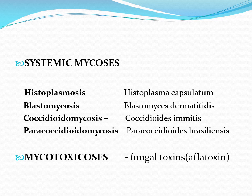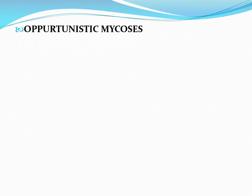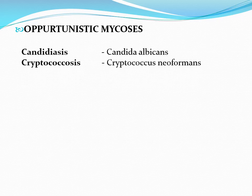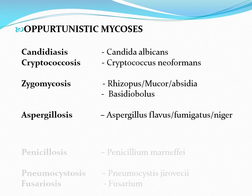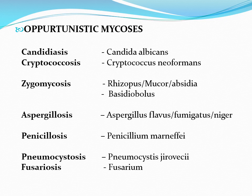Mycotoxicosis refers to disease caused by toxins produced by certain fungi, such as aflatoxins. The most important category is opportunistic mycosis — the largest group — occurring in persons with low immunity. Examples include candidiasis caused by Candida, cryptococcosis, zygomycosis (Rhizopus and Mucor), aspergillosis, and penicilliosis.